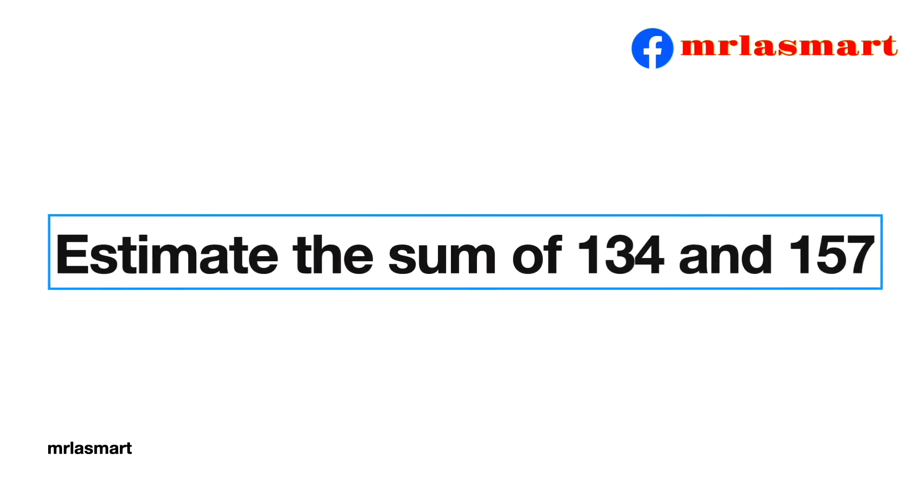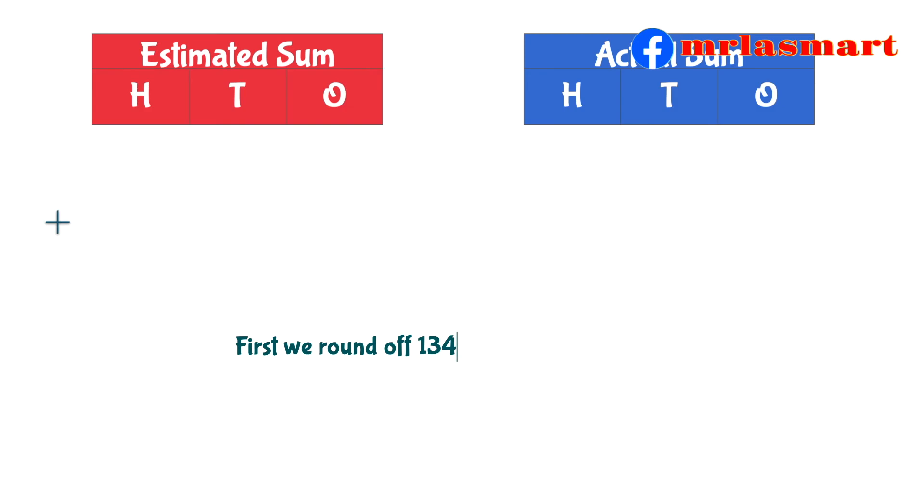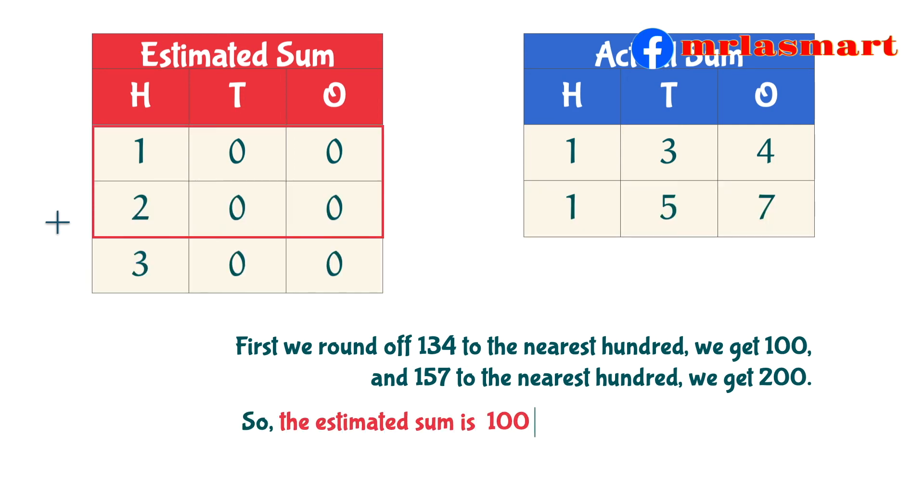Estimate the sum of 134 and 157. First we round off 134 to the nearest 100, we get 100, and 157 to the nearest 100, we get 200. So, the estimated sum is 100 plus 200 equals 300. The actual sum is 134 plus 157 equals 291.